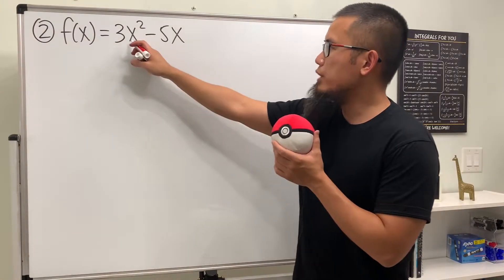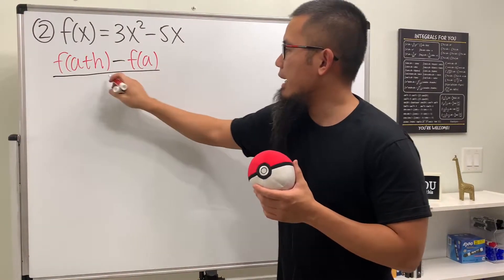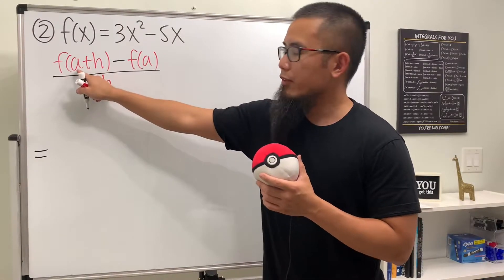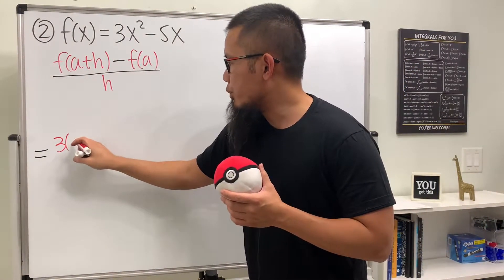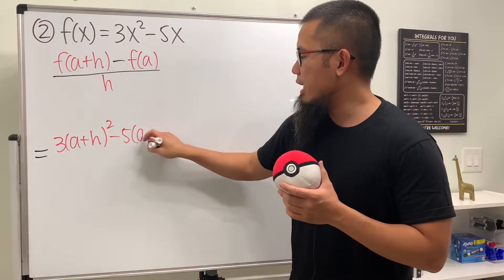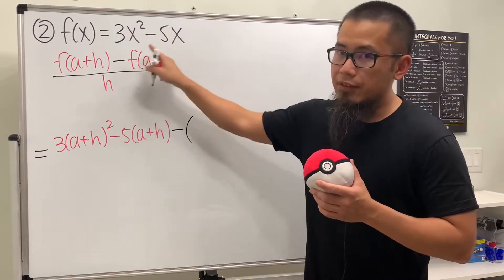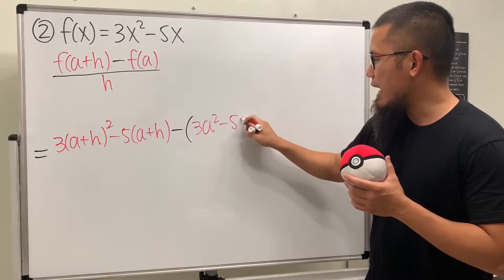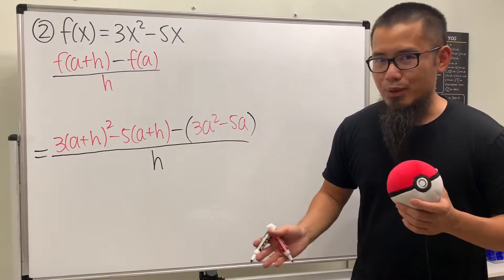For the second function, f(x) = 3x² - 5x. Again we write the difference quotient formula: f(a+h) minus f(a), divided by h. We plug (a+h) into both x terms, giving us 3(a+h)² - 5(a+h) for f(a+h). Then we subtract f(a) = 3a² - 5a, all divided by h.